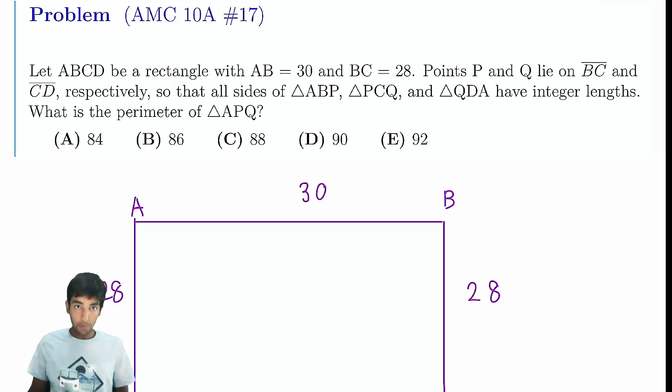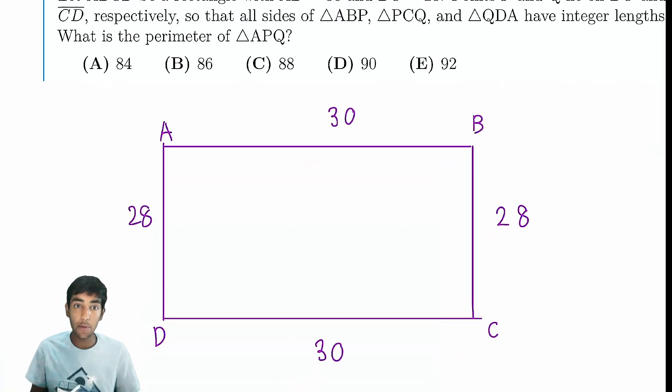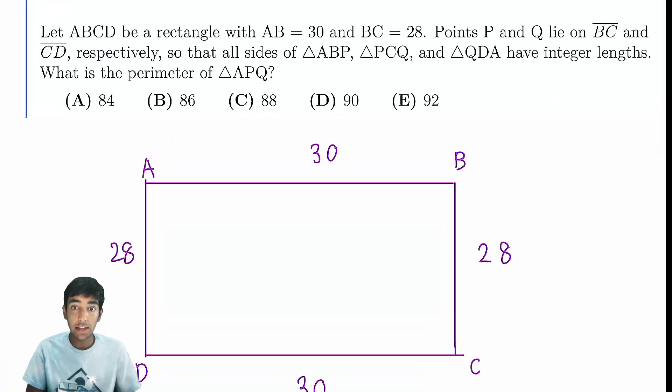Let's tackle this geometry problem from the AMC10A. Let ABCD be a rectangle with AB equals 30 and BC equals 28.